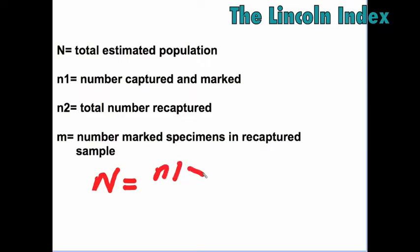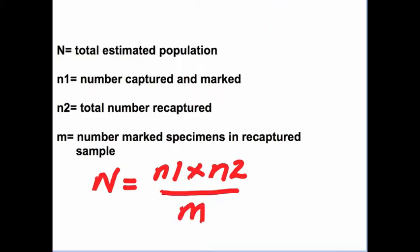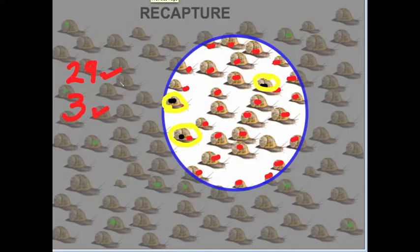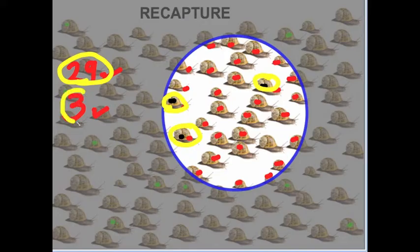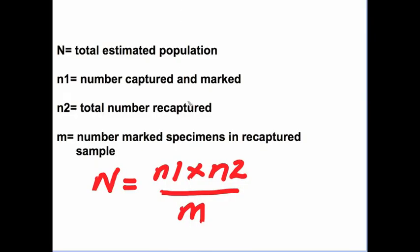N2 is the total number recaptured and m is the number marked in the recaptured sample. So it's N1 times N2 over m would give you N. 29 is the number recaptured and 3 is the number marked m in our second sample. So m equals 3 and N2 equals 29.